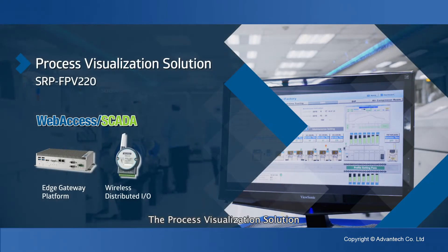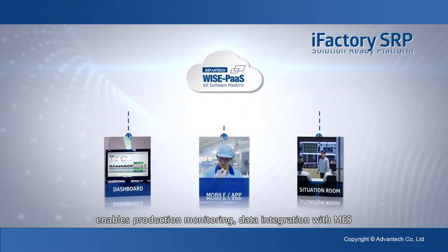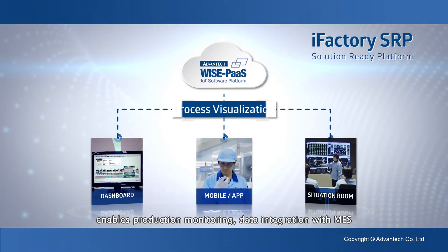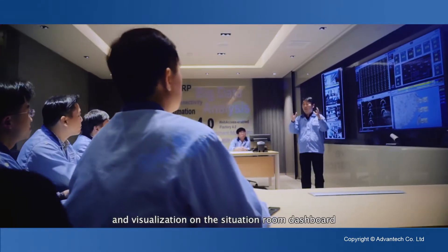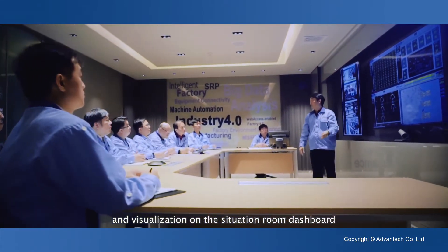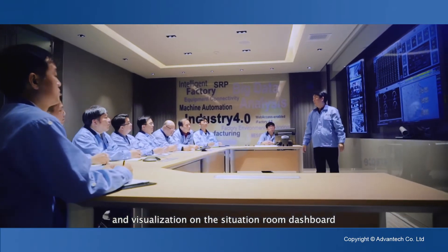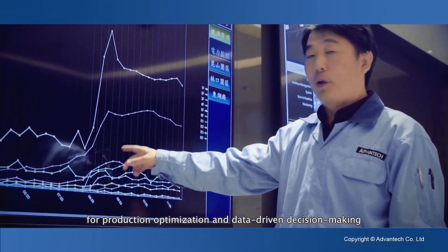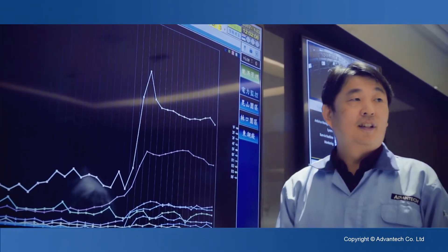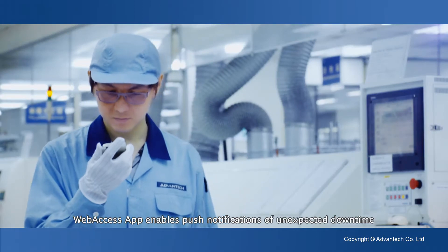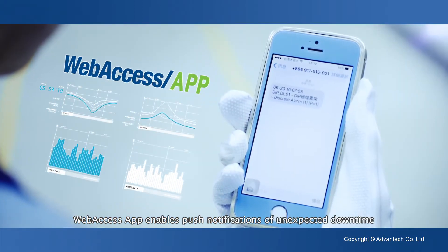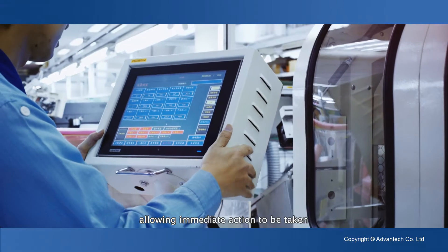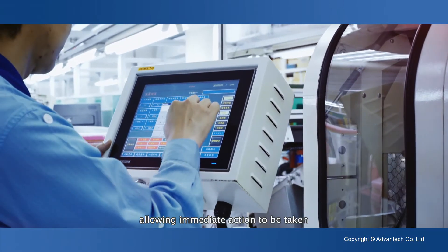The process visualization solution enables production monitoring, data integration with MES, and visualization on the situation room dashboard for production optimization and data-driven decision-making. The web access app enables push notifications of unexpected downtime, allowing immediate action to be taken.